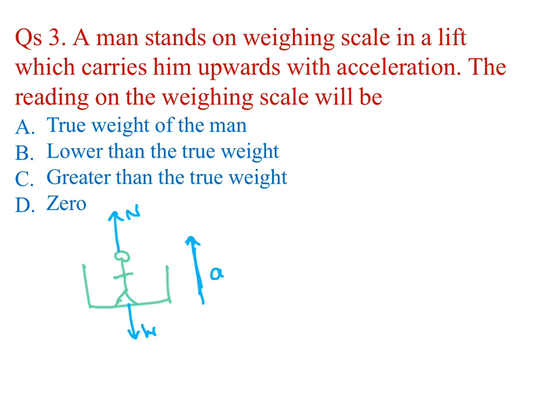Reading on the weighing scale should be normal reaction N. The equation is F equal to MA. In the direction of motion, N minus W equal to MA, W equal to mg. So N equals W times (1 plus a/g). Therefore, greater than the true weight is the answer.